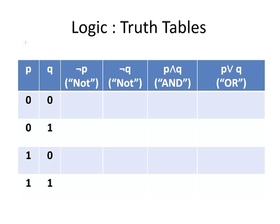Not P is essentially the negation of P — it's the opposite of P. So if we've got 0 here, that means we'll have 1 here. We have 0 here again, we'll have 1 here. We have 1 here, and the opposite of that is 0, and again, 0.